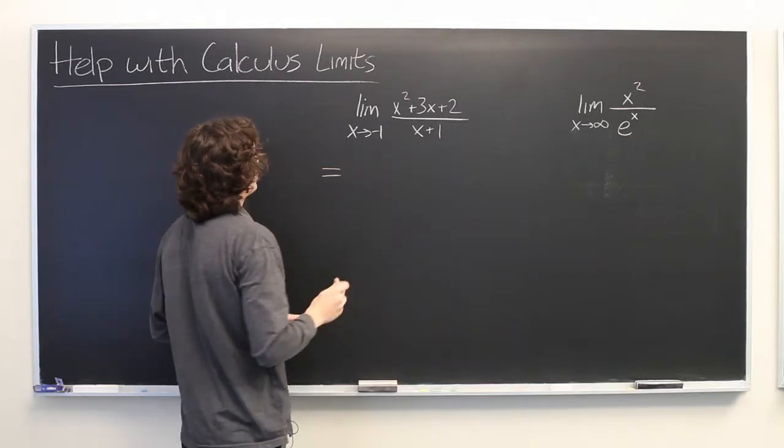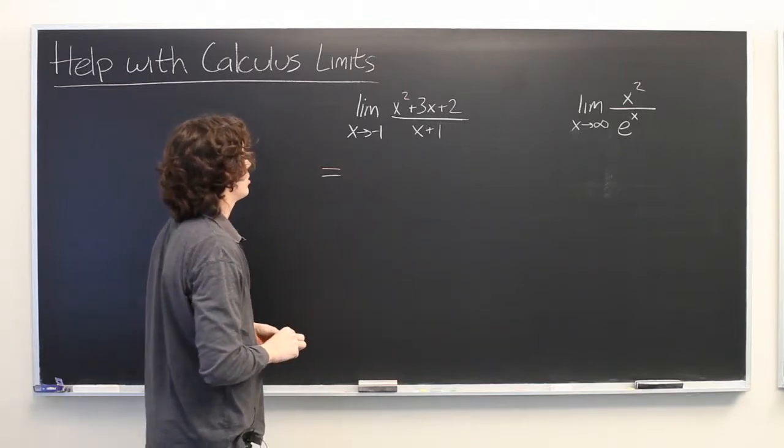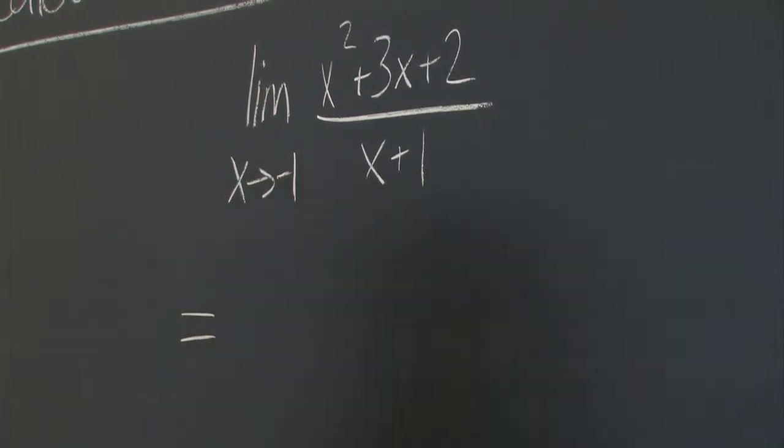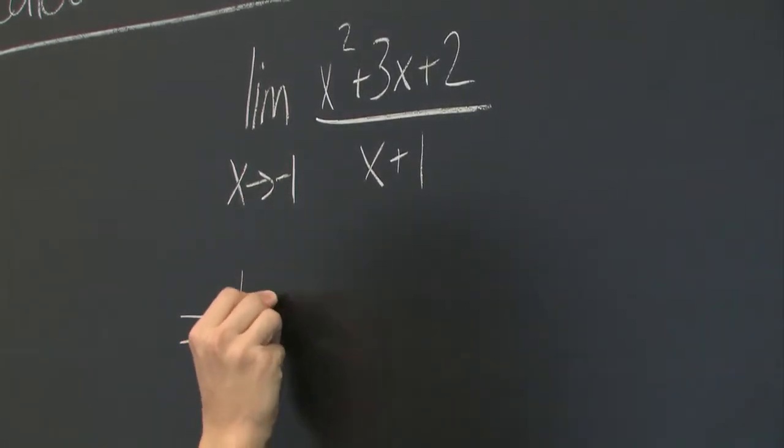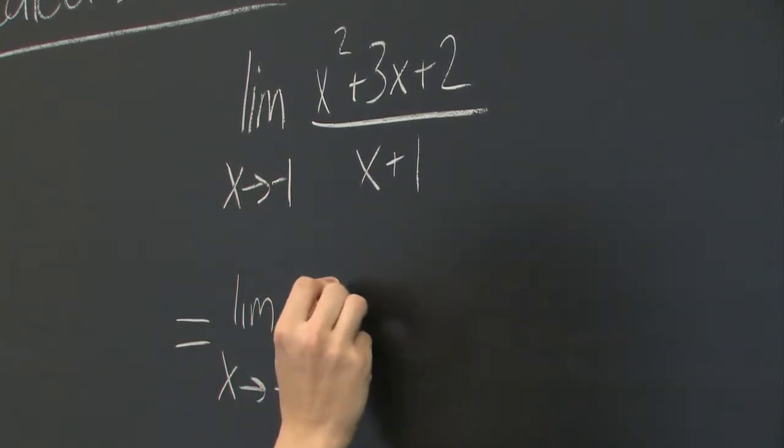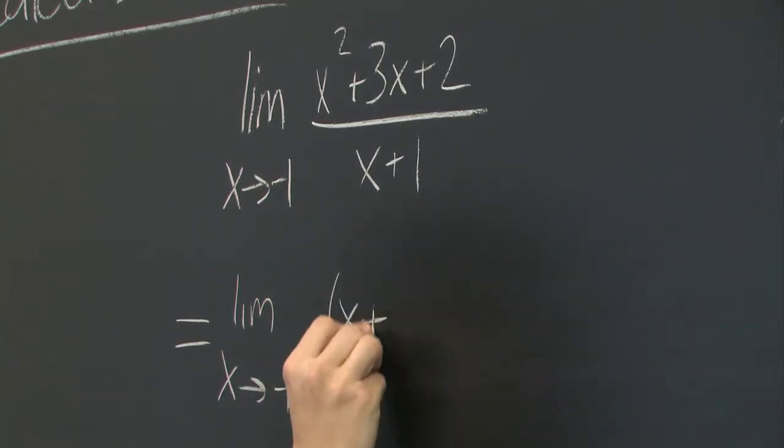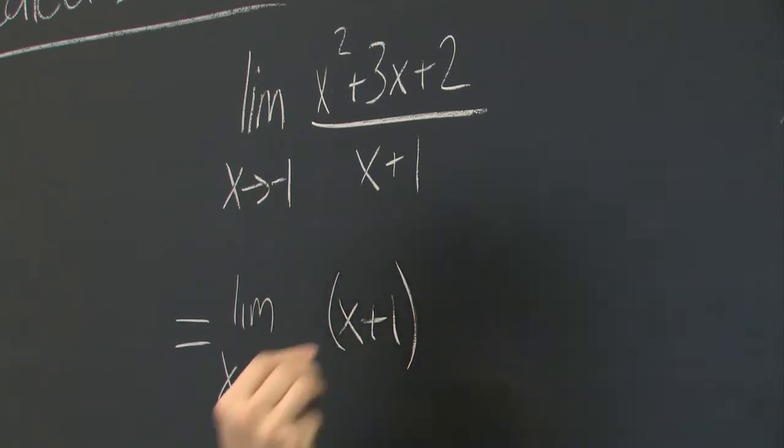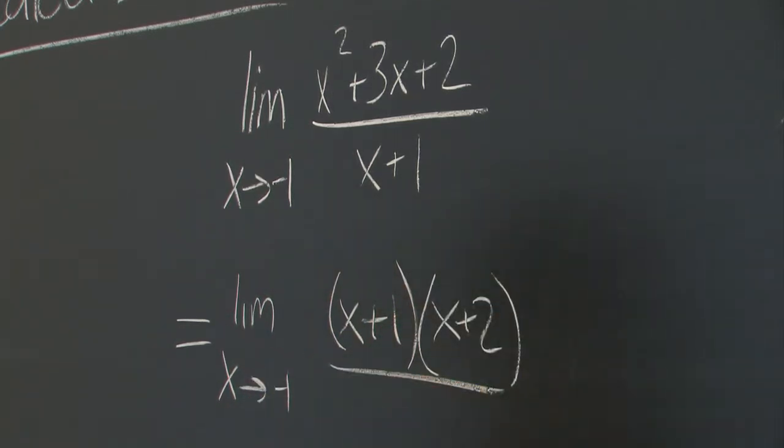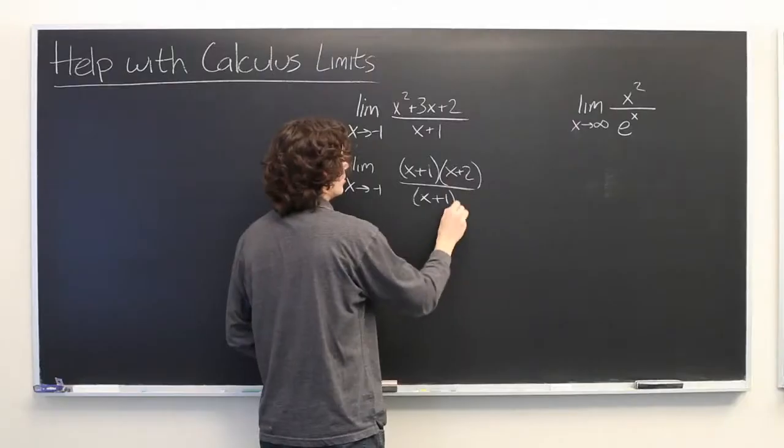And what frequently happens in these sorts of problems is you are presented with a polynomial in the numerator that can be factored. And it so happens that the numerator can be factored into x plus 1 times x plus 2. And again, this is all over x plus 1.